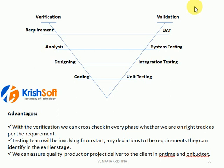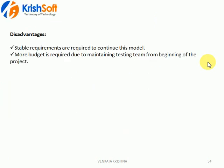Coming to the drawbacks of the VV model: stable requirements are required for this model. If requirements are not stable, once coding is completed and the client changes the requirements, we need to start from the beginning again — requirements, analysis, design, coding, testing. So if you want to go with the VV model, the requirements should be stable enough to continue with all the phases.